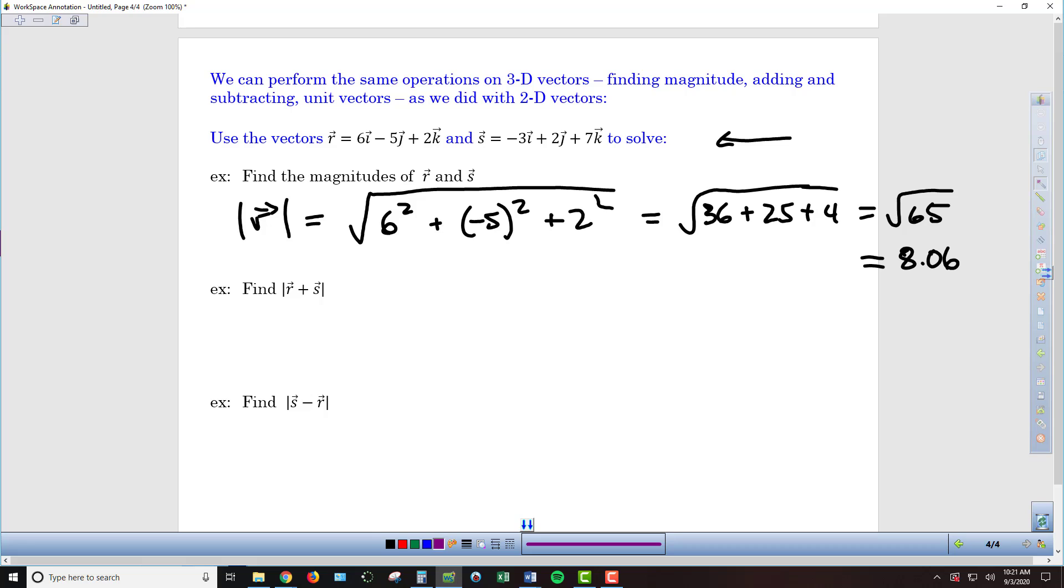And then we can do the same thing for S. So the magnitude of S is going to be the square root of negative 3 squared plus 2 squared plus 7 squared, which is the square root of 9 plus 4 plus 49, which is the square root of 62.